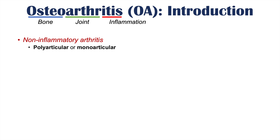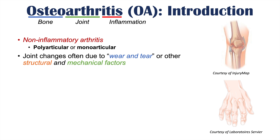Osteoarthritis is a non-inflammatory arthritis that is either polyarticular or monoarticular. Polyarticular means that many joints are affected — oftentimes more than four or five — or it can be monoarticular, meaning only one joint is affected. The joint changes in osteoarthritis are often due to wear and tear or other structural and mechanical factors.